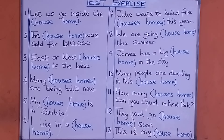A house is any building used for dwelling in. But a home is that particular house in which one is living.